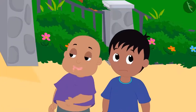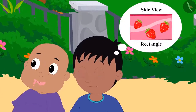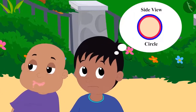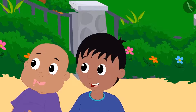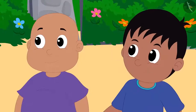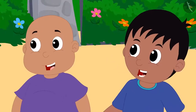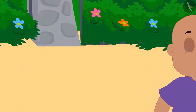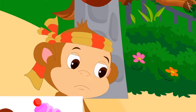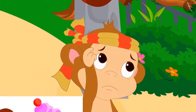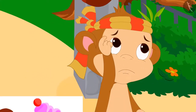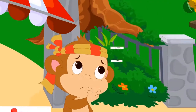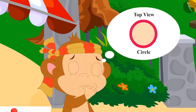Bablu ate the ice cream and Raju began to think about how Bablu had made a fool of Babban. Bablu and Raju laughed and started walking home, while Babban kept scratching his head thinking about how they had managed to fool him.